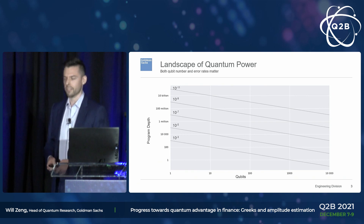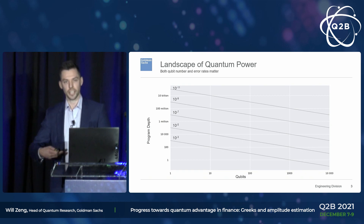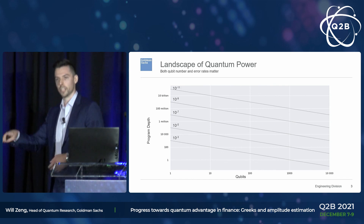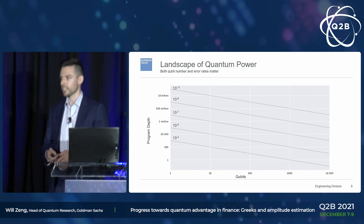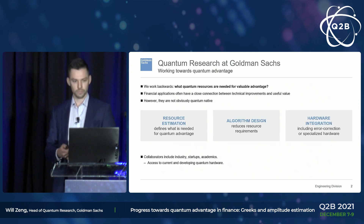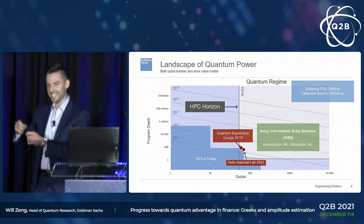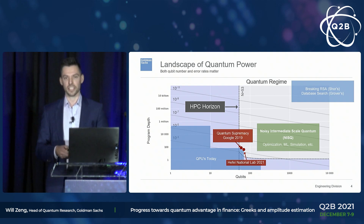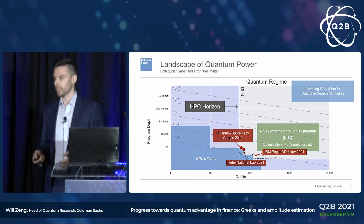I'll summarize the takeaway from this talk by putting resource estimates on a landscape of quantum power. On the x-axis is the number of qubits, on the y-axis the depth of a program you'd want to run, and crossing as equal potentials are the error rates. So at 10 to the minus 3, you can run 1,000 operations on one qubit, or one operation on 1,000 qubits. This gives you a sense of where we are today and where we want to go.